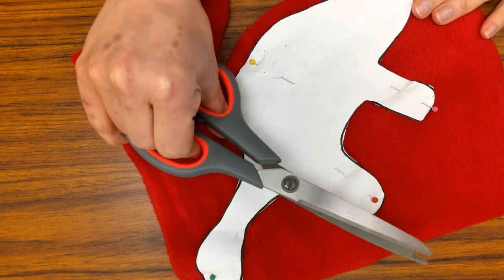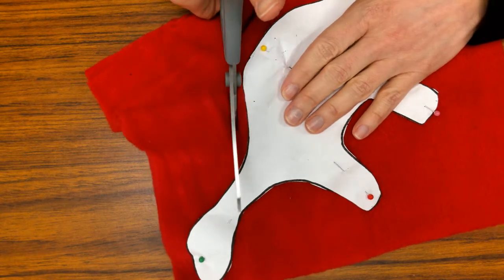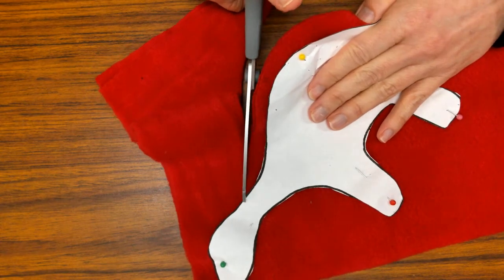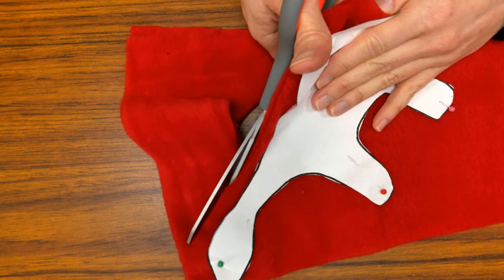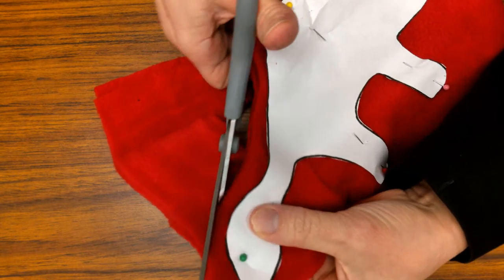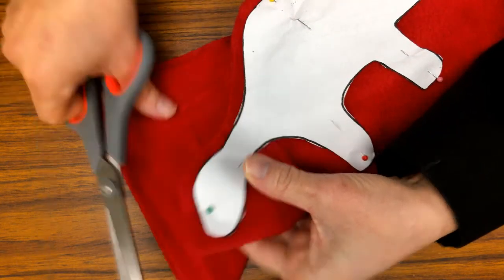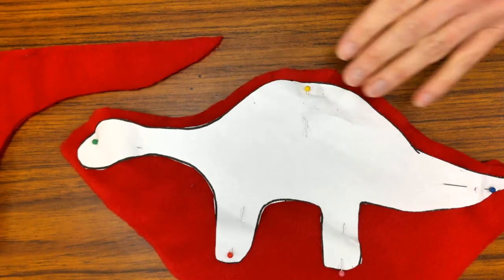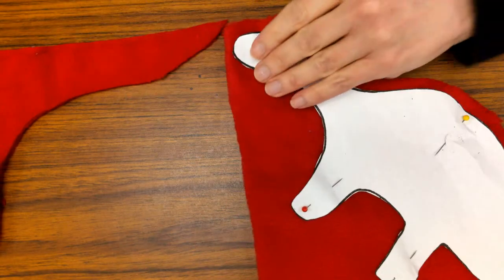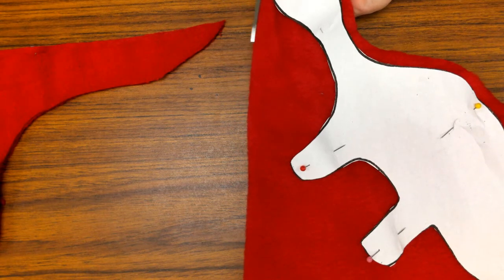So, now I have the scissors that I gave you. Look how much better they cut. See that? They cut so much better. I'm just going to take it, and I'm going to cut all around the outside. Not right up next to it, but along the outside. I'm going to get rid of this. Turn my little dino around. And cut him out.